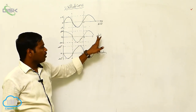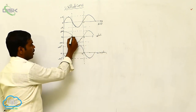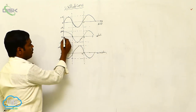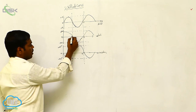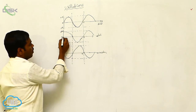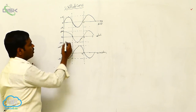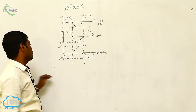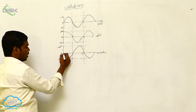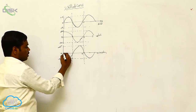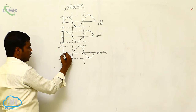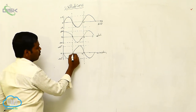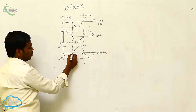If we observe the velocity, the velocity is maximum at the mean position and zero at the extreme position. The acceleration is minimum at the mean position and maximum at the extreme position.